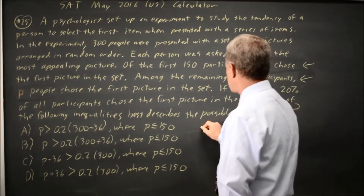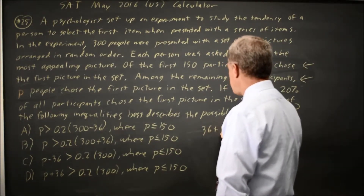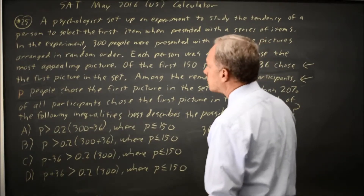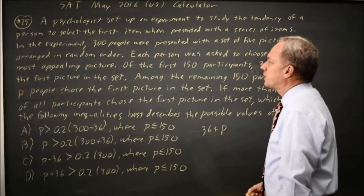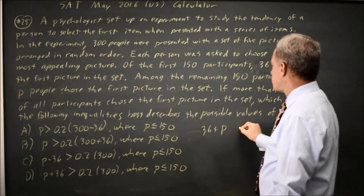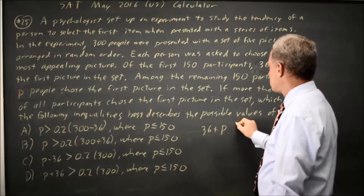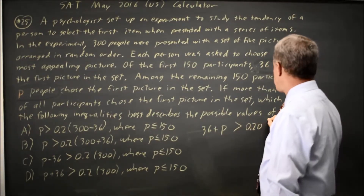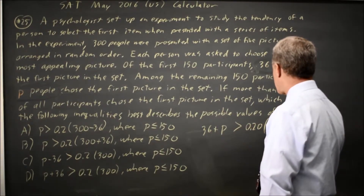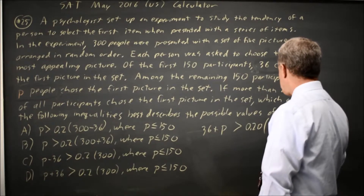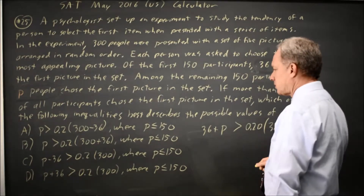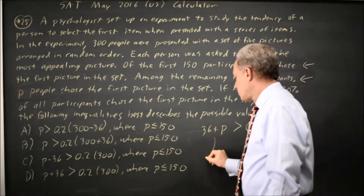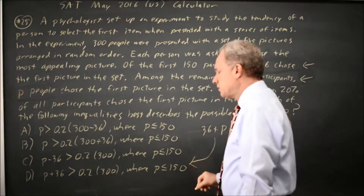So that would be 36 plus P choosing the picture, and you want that to be more than 20% of all participants, and there were 300 participants. And that is choice D.